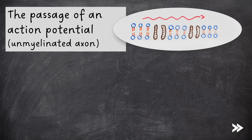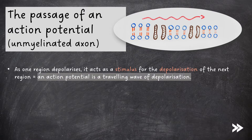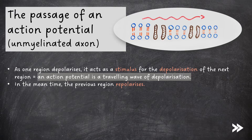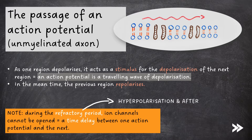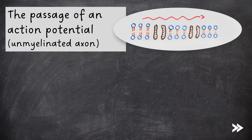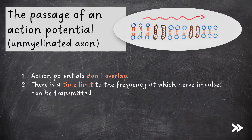Next we need to consider how an action potential passes along an axon. Axons can either be myelinated, meaning that they are surrounded by a myelin sheath, or unmyelinated, and the way an action potential passes is slightly different depending on this. Along an unmyelinated axon, as one region depolarises, it acts as a stimulus for the depolarisation of the next region — an action potential is therefore a travelling wave of depolarisation. In the meantime, the previous region repolarises. During the refractory period, which is hyperpolarisation and after, ion channels cannot be opened, causing a time delay between one action potential and the next. This results in three key features: action potentials don't overlap, there is a time limit to the frequency at which nerve impulses can be transmitted, and action potentials are unidirectional.